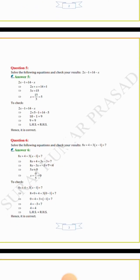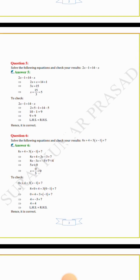Question number 5: solve 2x minus 1 equals 14 minus x. Then 2x plus x equals 14 plus 1, so 3x equals 15, giving x equals 15 by 3, and the value of x is 5.